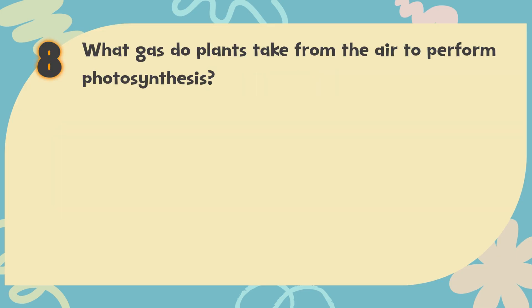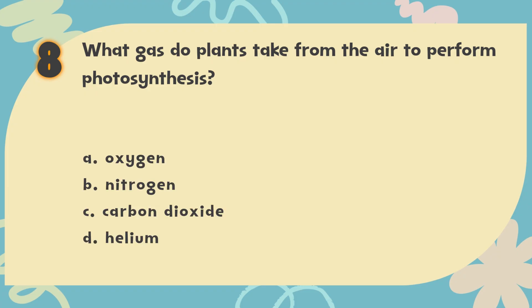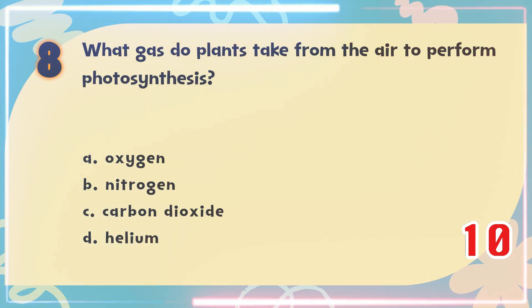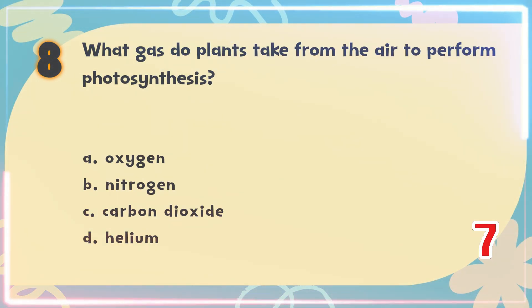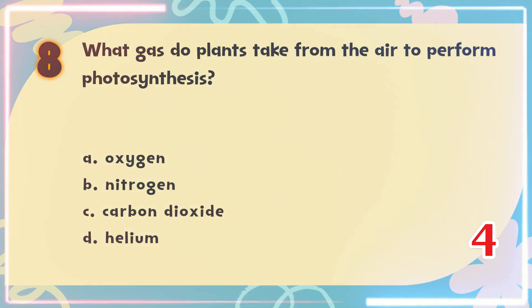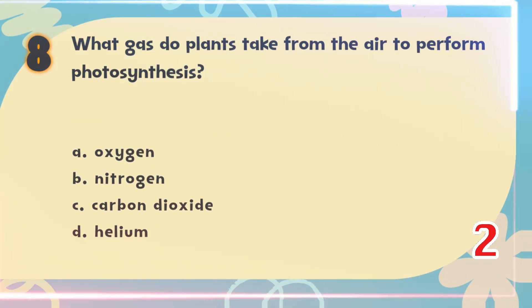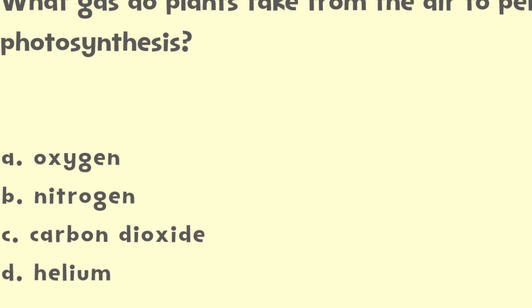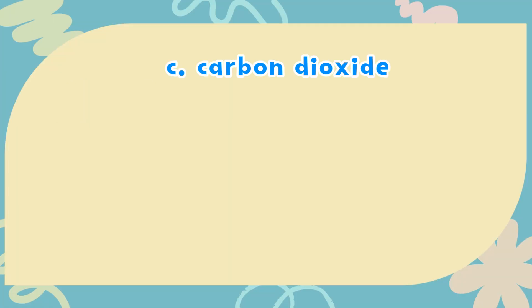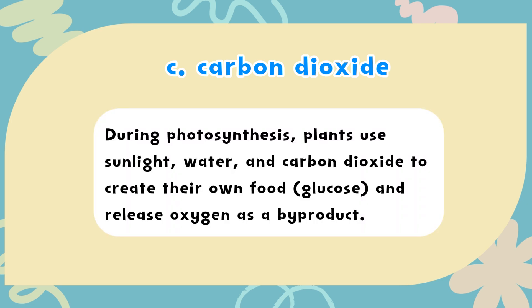Number 8. What gas do plants take from the air to perform photosynthesis? The choices are: A. Oxygen, B. Nitrogen, C. Carbon Dioxide, D. Helium. The correct answer is C. Carbon Dioxide. During photosynthesis, plants use sunlight, water, and carbon dioxide to create their own food — glucose — and release oxygen as a byproduct.